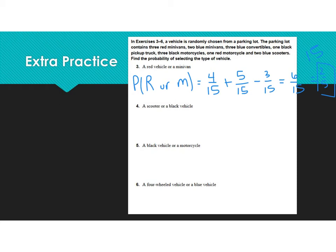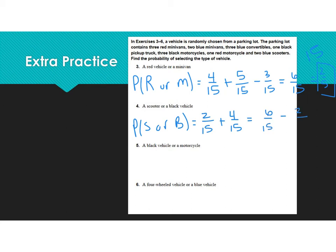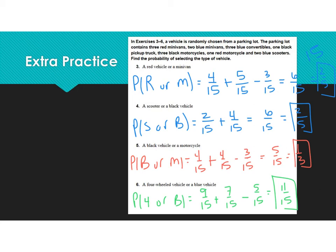Let's look at the probability of a scooter or a black vehicle. We have 2 out of 15 scooters plus the probability of a black vehicle, which is 4 out of 15. Is there any overlap — are there any black scooters? There are not. So you don't subtract the overlap. You have 6 out of 15, which is again 2 out of 5. For the probability of a black vehicle or motorcycle: 4 black vehicles out of 15, plus 4 motorcycles out of 15, minus the overlap of 3 black motorcycles, gives 5 out of 15 or 1 third.